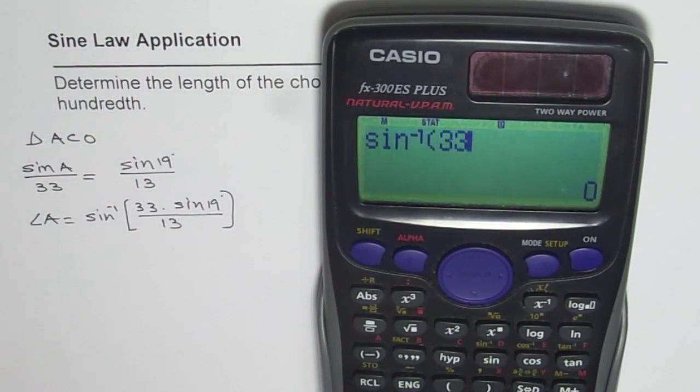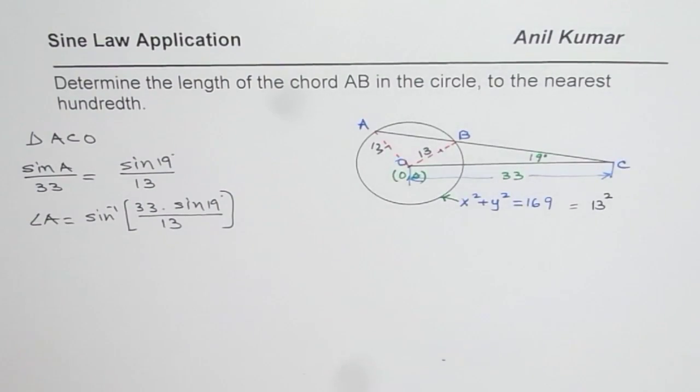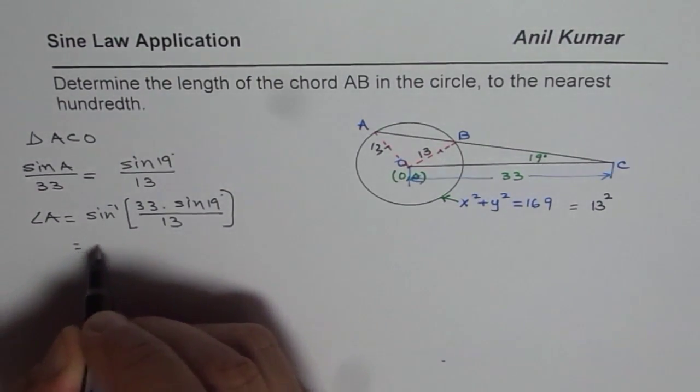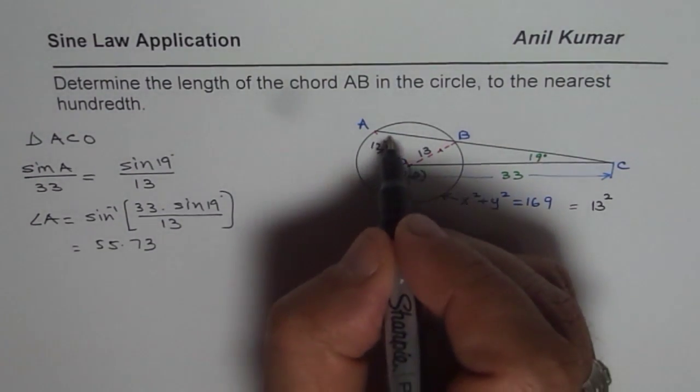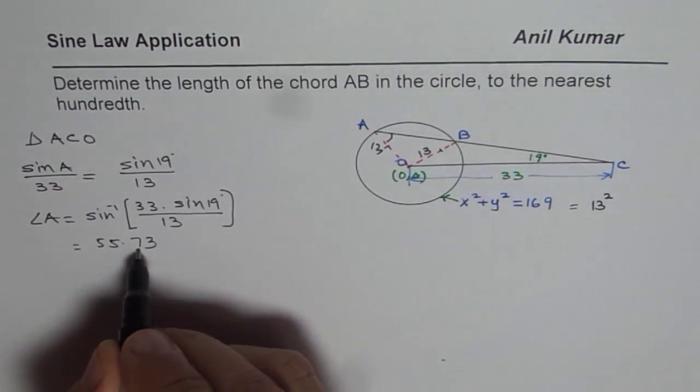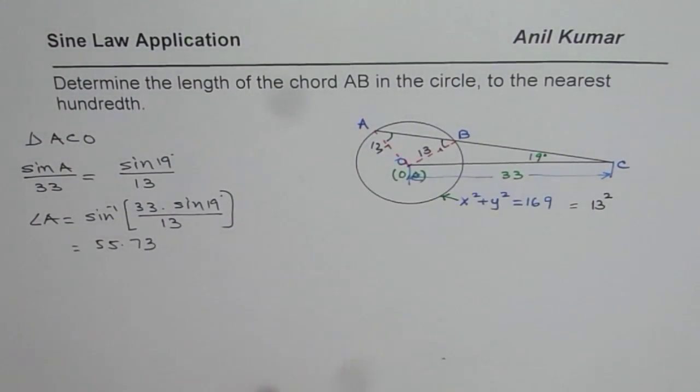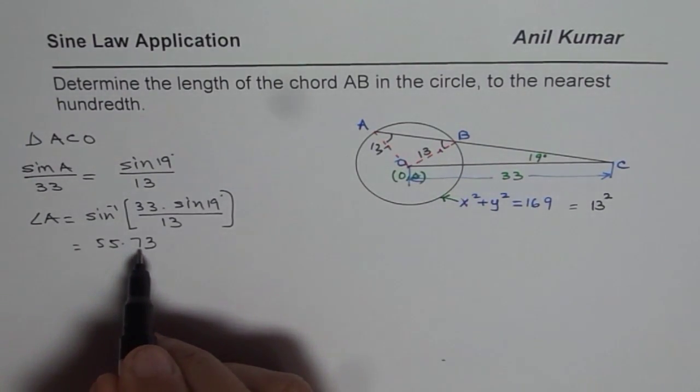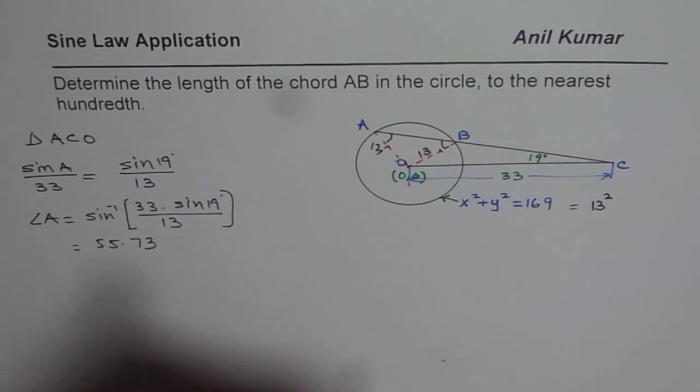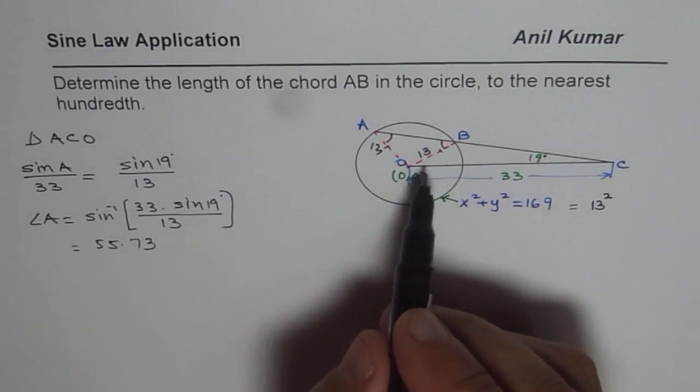So we can use the calculator and find this answer. So we need sine inverse, within bracket we will write 33 times sine of 19 and then we will divide this by 13, bracket close equals to, we get 55.734. So that is 55.73, so we know this angle is 55.73.